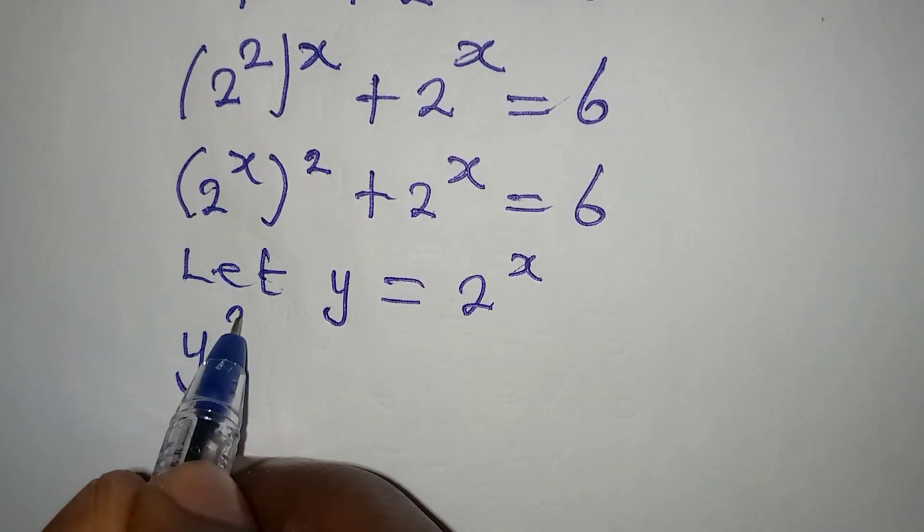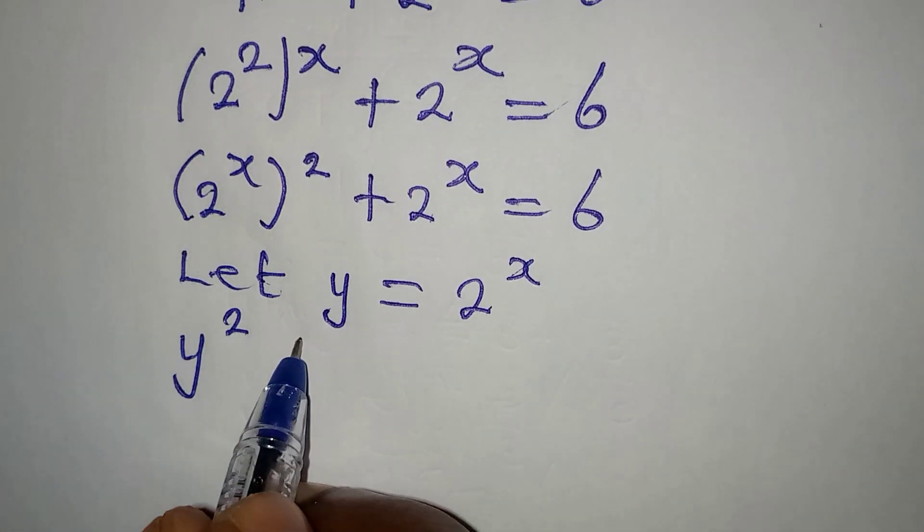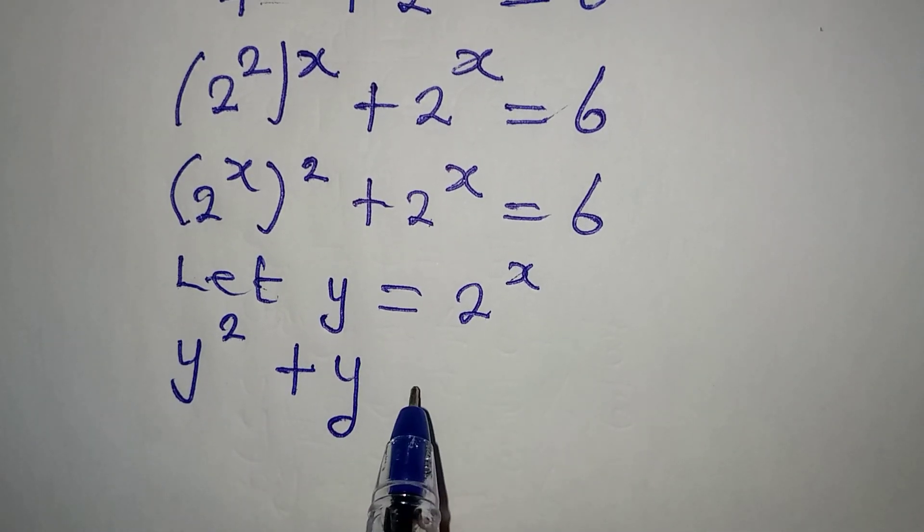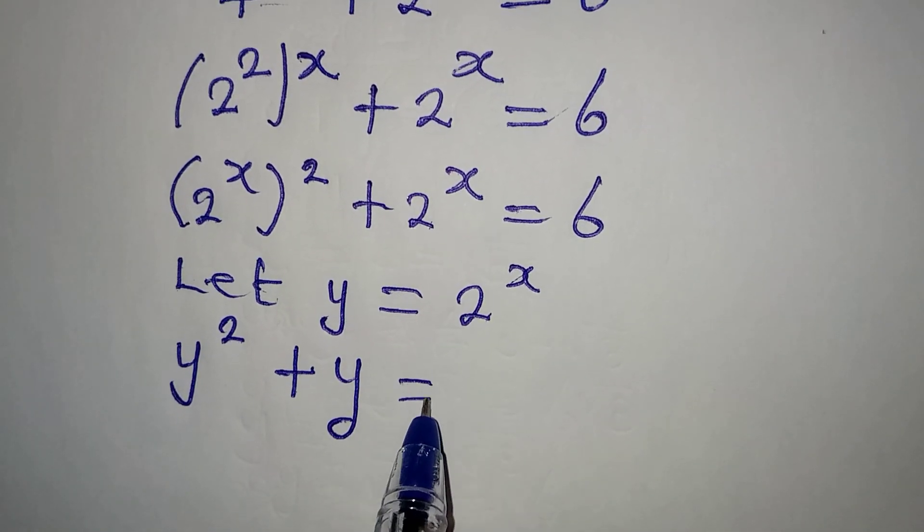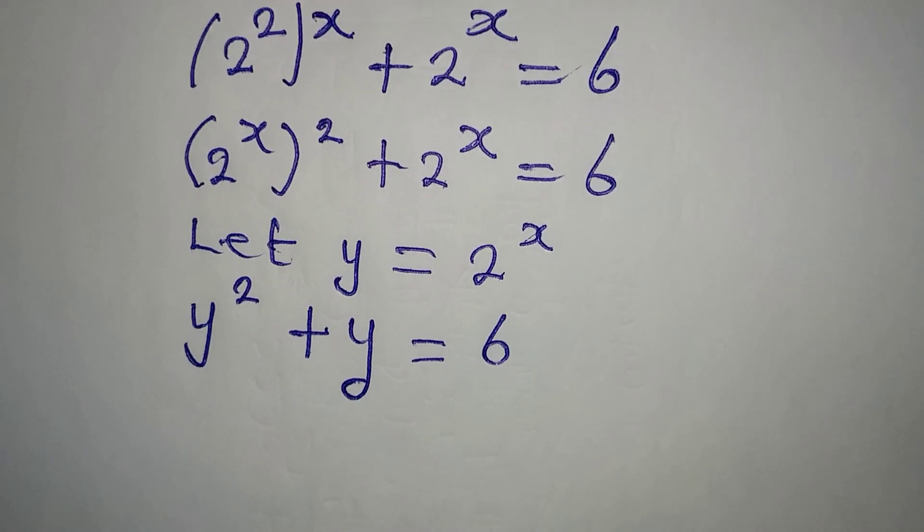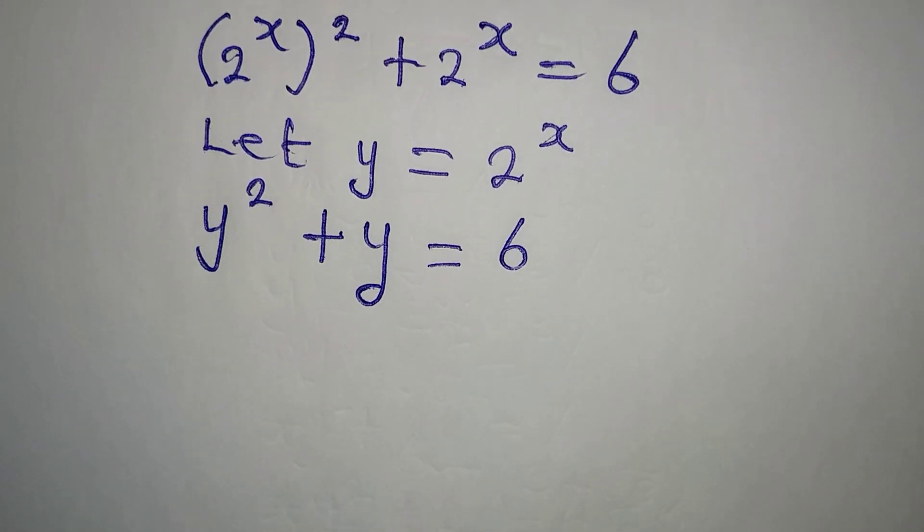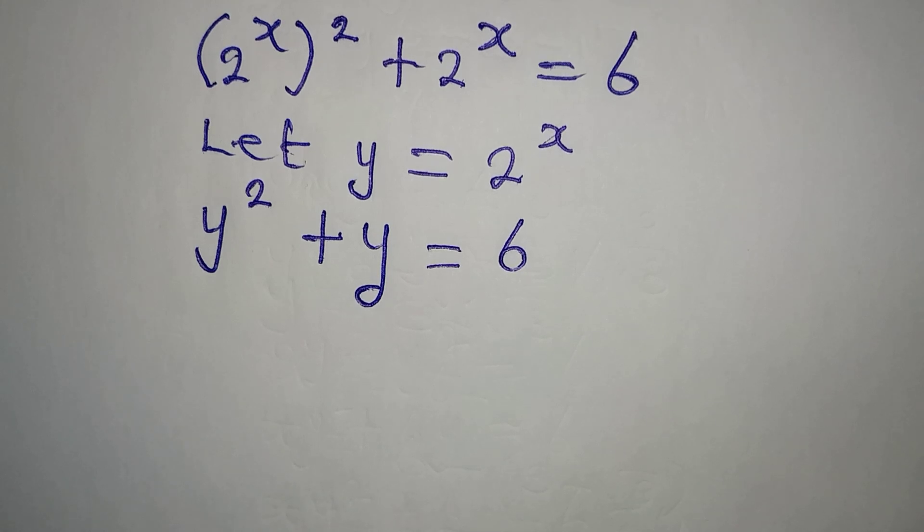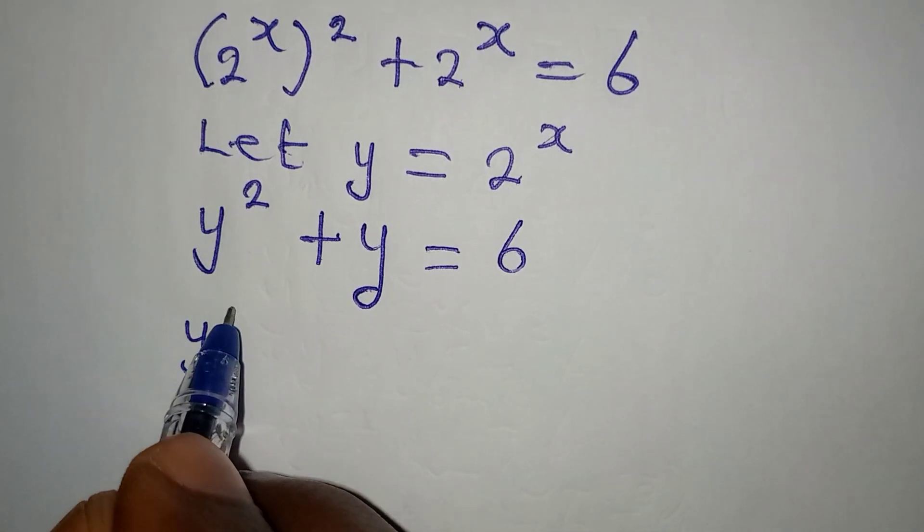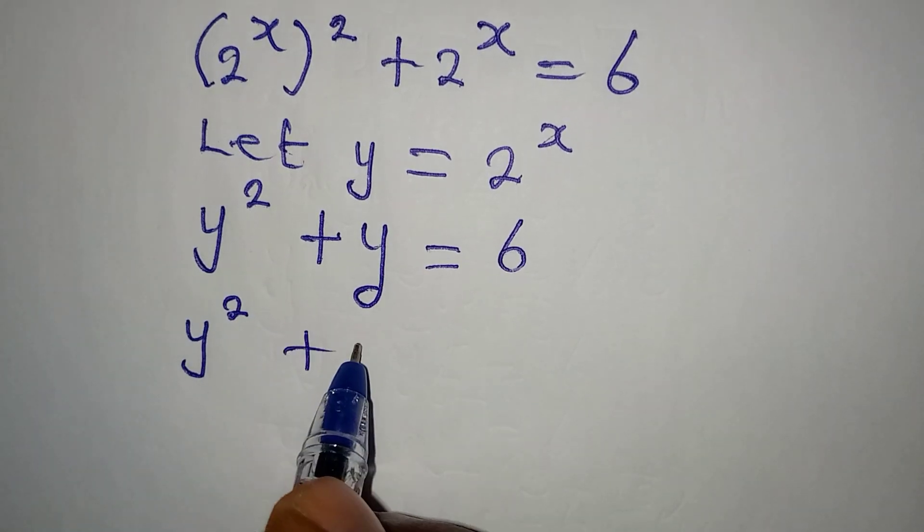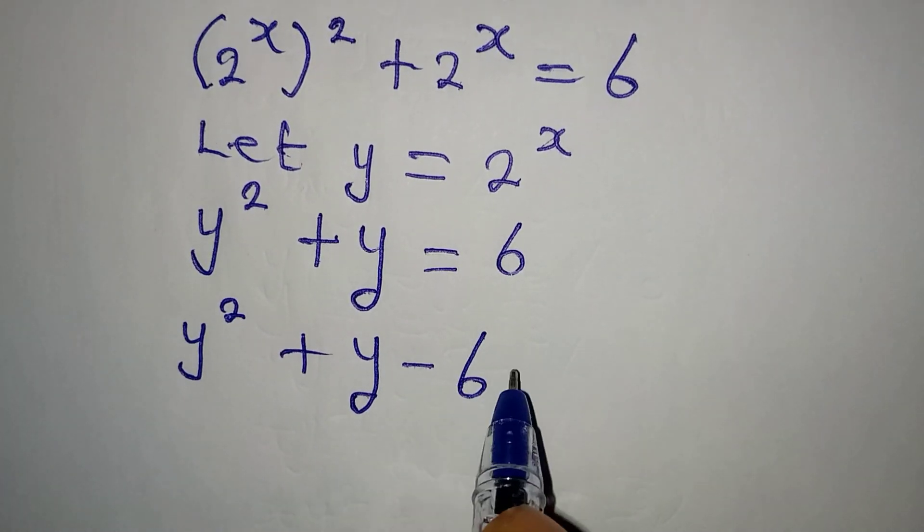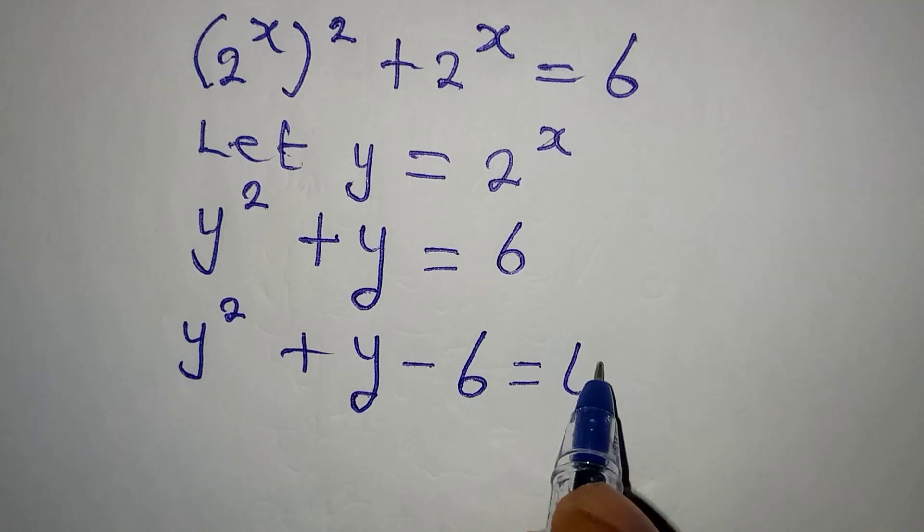The square on it will appear. Then plus, here again, we are going to have y, right? And then this is equal to 6. Now this is now a quadratic equation. And we can solve this as I bring this to the left-hand side. So y squared plus y minus 6 is equal to 0.